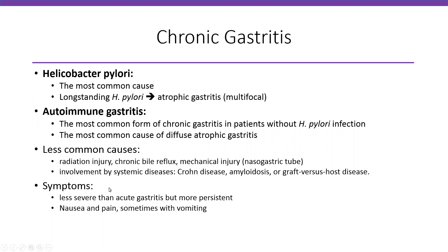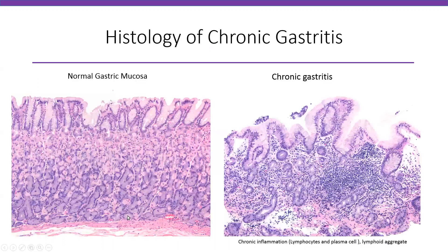What are the symptoms patients present with in chronic gastritis? It's less severe than acute gastritis, but often more persistent. Patients often present with nausea, pain, and sometimes vomiting. Histologically, gastritis is inflammation of the gastric mucosa. Chronic inflammation is characterized by plasma cells and lymphocytes. Here you can see normal gastric mucosa with gastric foveolar epithelium and fundic-type or antral-type glands. In chronic gastritis, you have lots of blue lymphocytes and plasma cells expanding between the gastric epithelium in the mucosa, and you can also have some lymphoid aggregates.